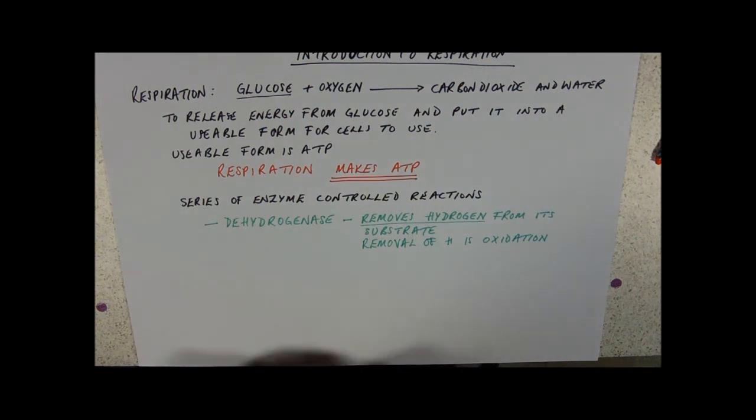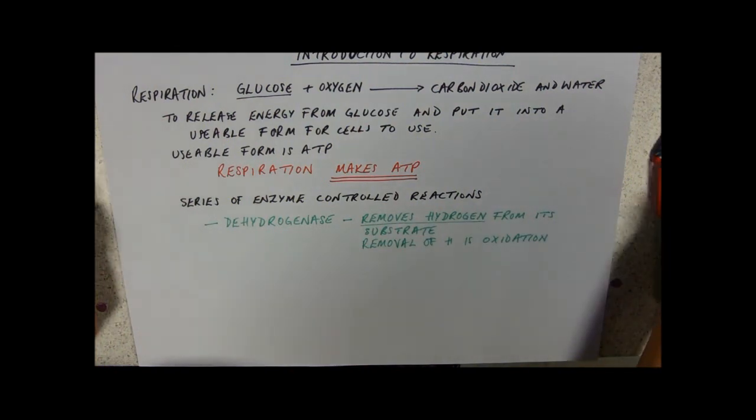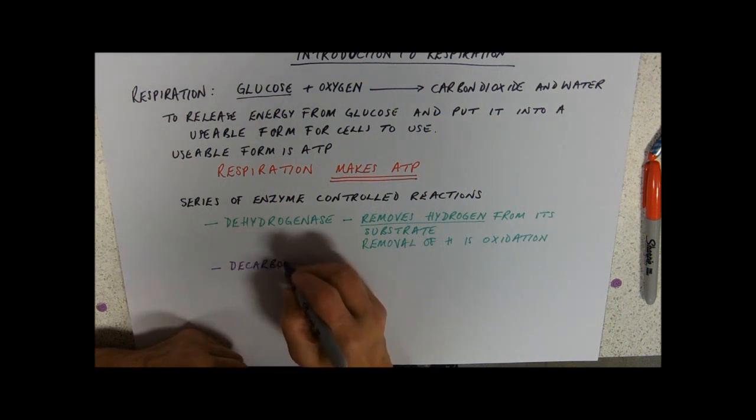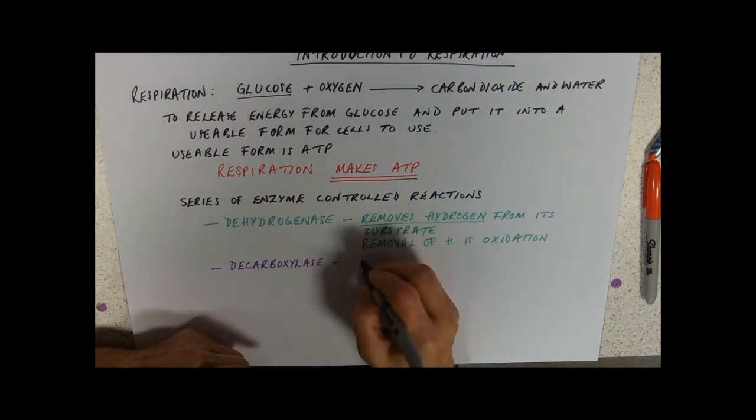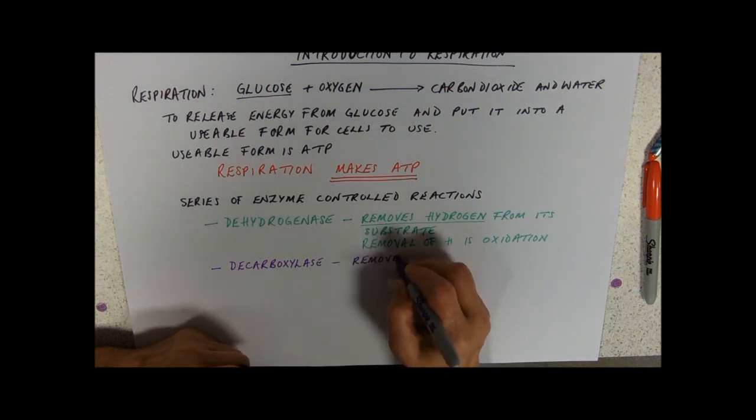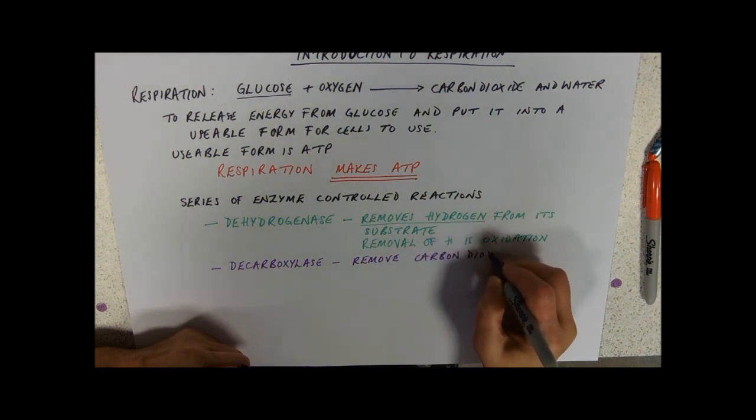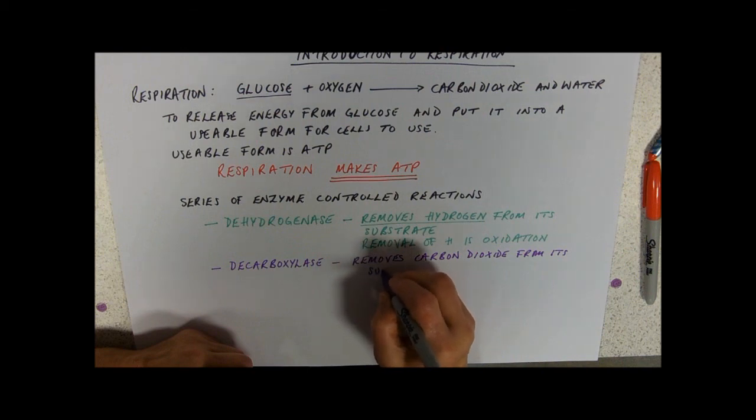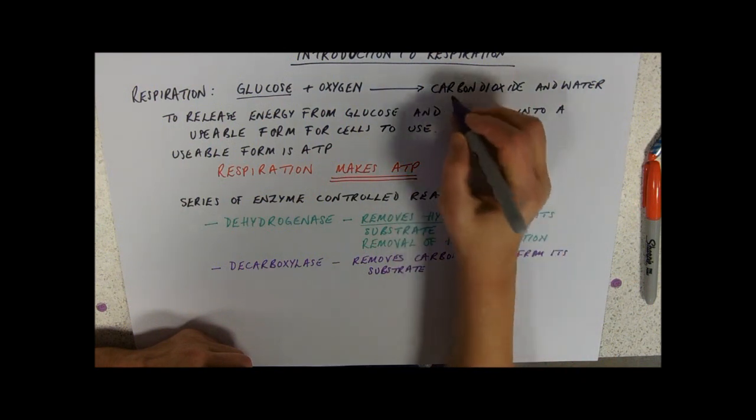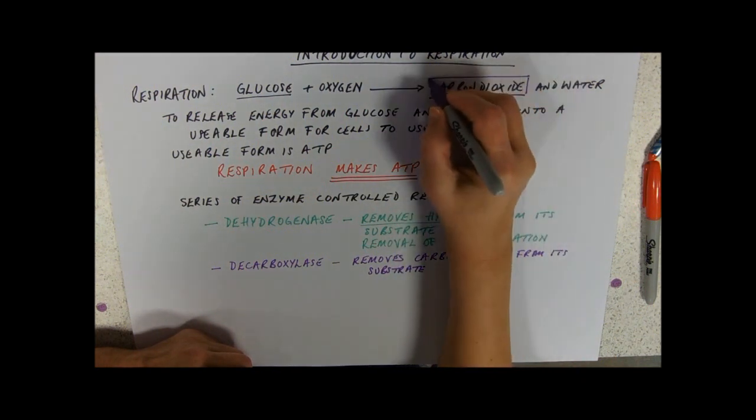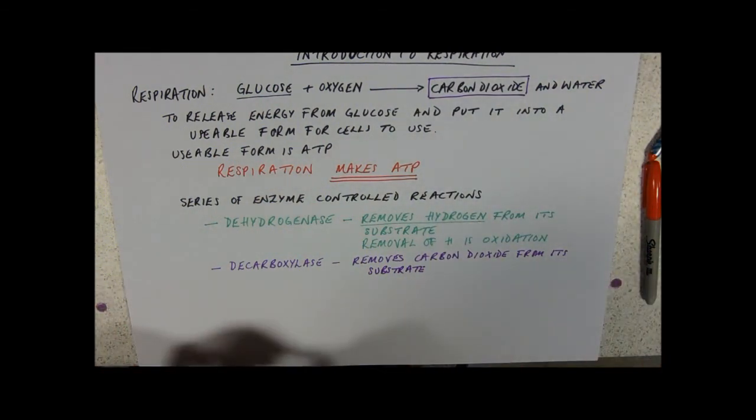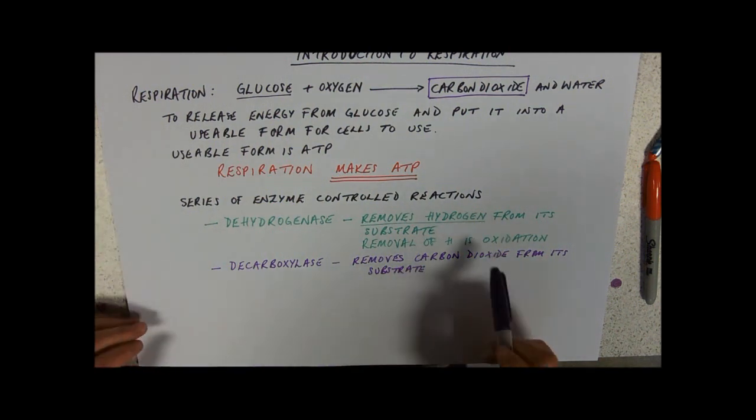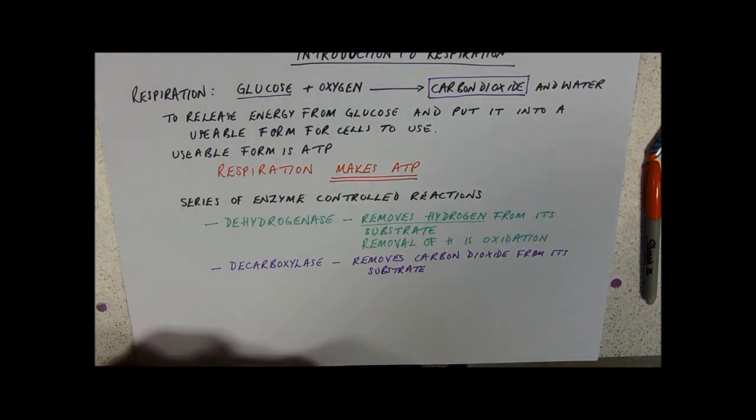Our other sort of enzyme that's involved in this series of reactions are decarboxylase enzymes. And these remove carbon dioxide from its substrate. And of course, we've got a clear link there to the production of carbon dioxide in respiration. When you did the experiment with the syringe full of yeast and glucose and you put it underwater and counted the bubbles coming off, that gas was carbon dioxide and you should have been writing in your write-up about decarboxylase enzymes.